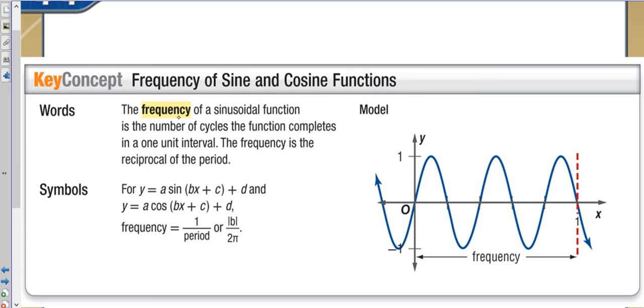But what frequency tells you, especially when it reduces, it really works well, is how many cycles you could complete before you go one unit to the right or to the left. We're not talking like necessarily 2π, which would be way off to the right. We're talking about how many cycles could we complete before we go one unit to the right. That's what frequency actually means.